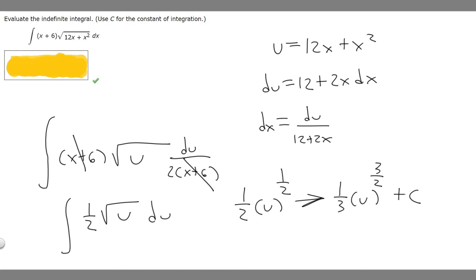Now that we have it like this, all we do is replace u with what we chose u to be, which is 12x + x squared. So our final answer is (1/3)(12x + x²)^(3/2) + C. This is our final answer.